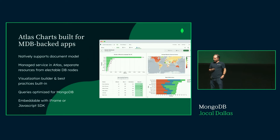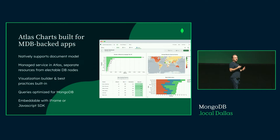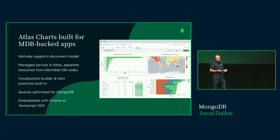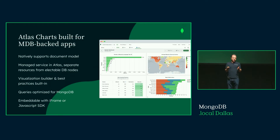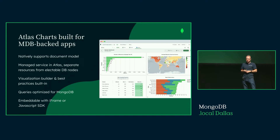The next workload is embedded analytics. Imagine you have an application and you want end users to see the number of orders per day or per month. Atlas provides a GUI builder to build charts that you embed with an iframe or a JavaScript SDK into your applications — you can even build it entirely from the SDK. It's built natively for MongoDB's document model so you don't have to flatten data into SQL to build charts, and the queries are optimized for MongoDB.